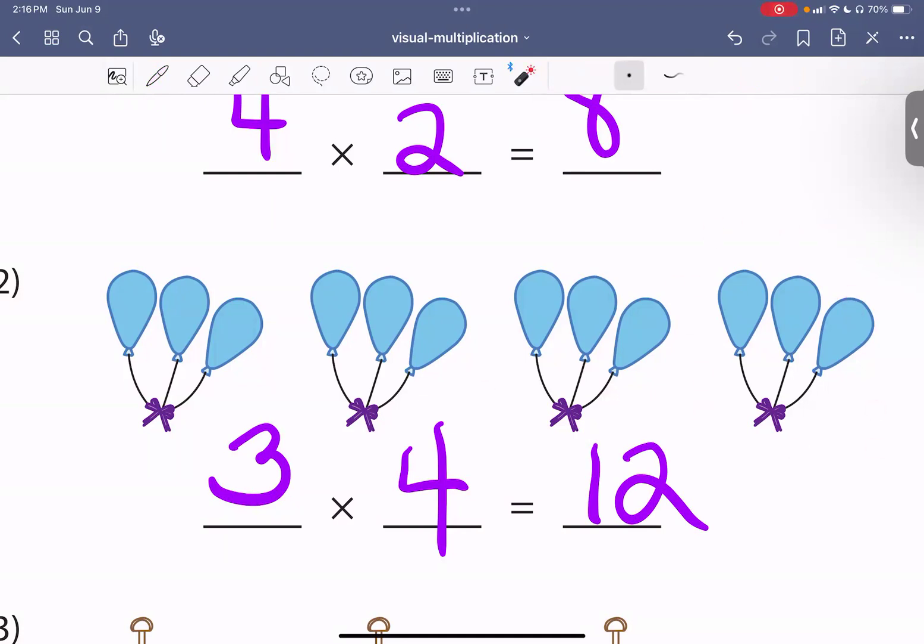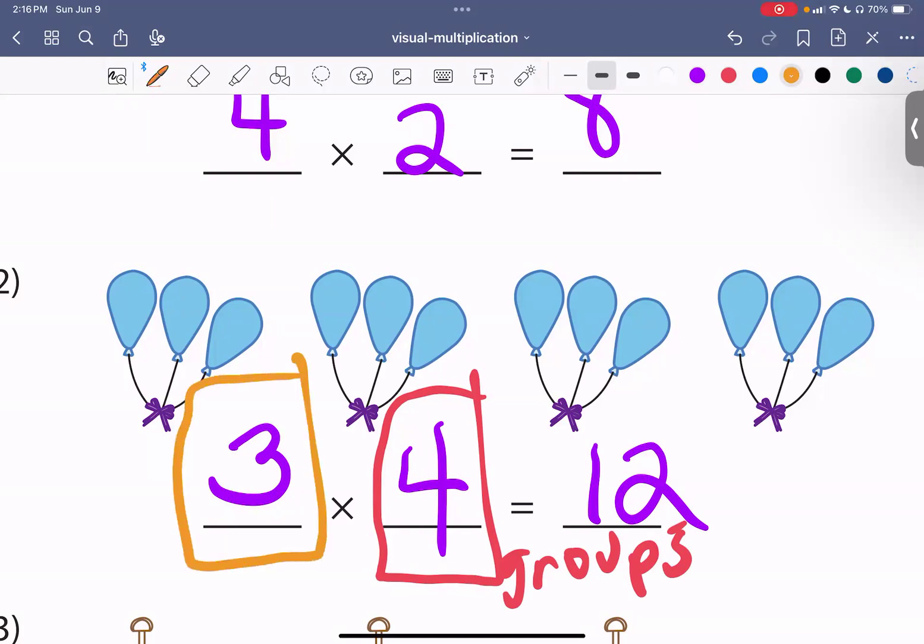So, this is one, two, three, four groups. So, that would be, this is the groups. And then I had each group had three balloons. So, that's one, two, three.